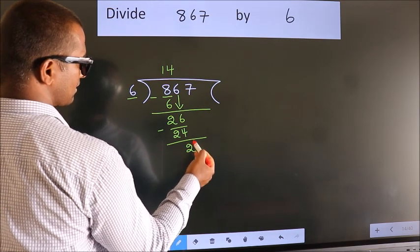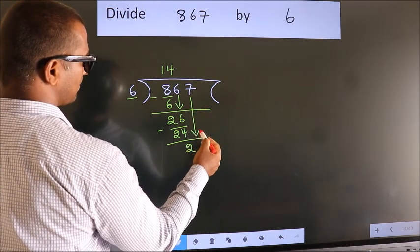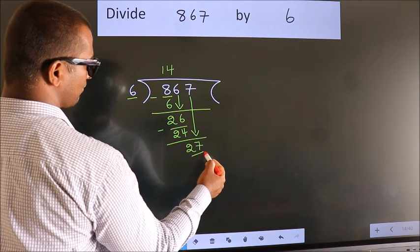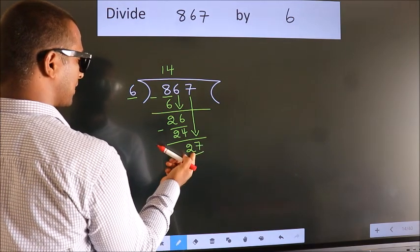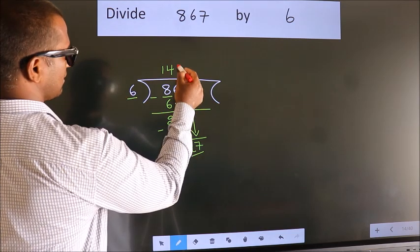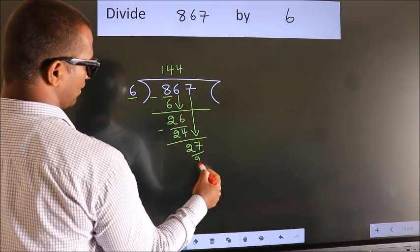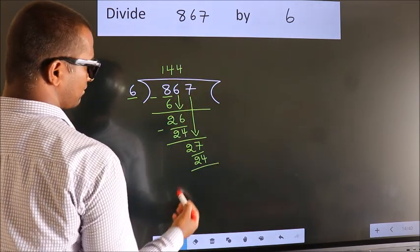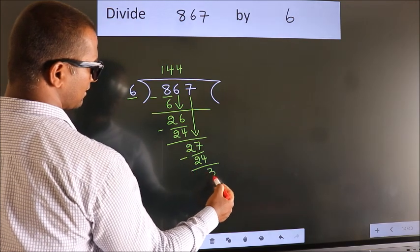After this, bring down the beside number. So 7 down. So 27. A number close to 27 in the 6 table is 6 times 4 is 24. Now we subtract. We get 3.